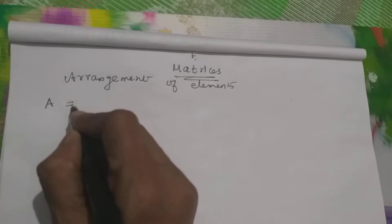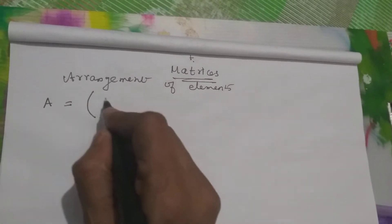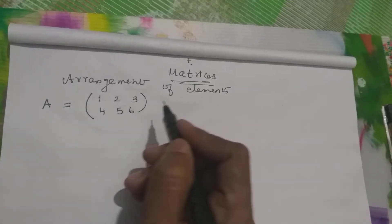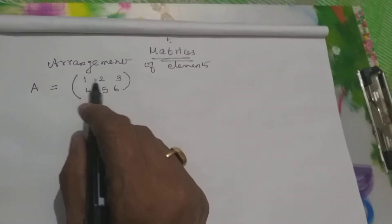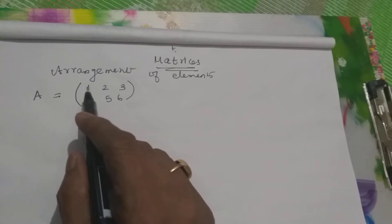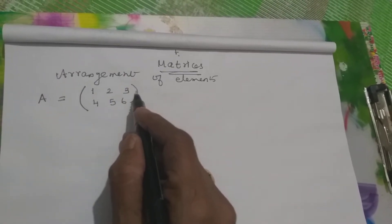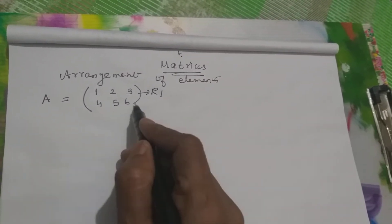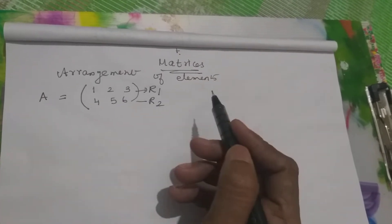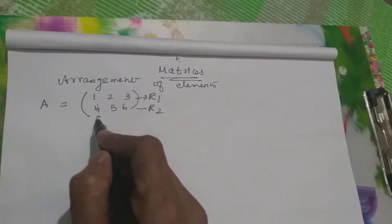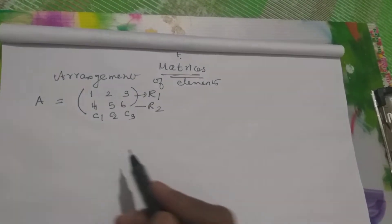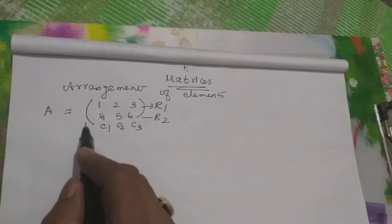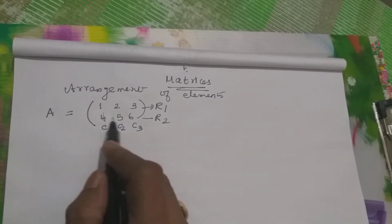For example, you take matrix A and write in single notation: 1, 2, 3, 4, 5, 6 — anything negative or positive does not matter. If it is arranged in one order, you see this order — first row, it is called row. So we can say it is row 1, row 2, and same way column 1, column 2, column 3. So this is a matrix, it is in one order.